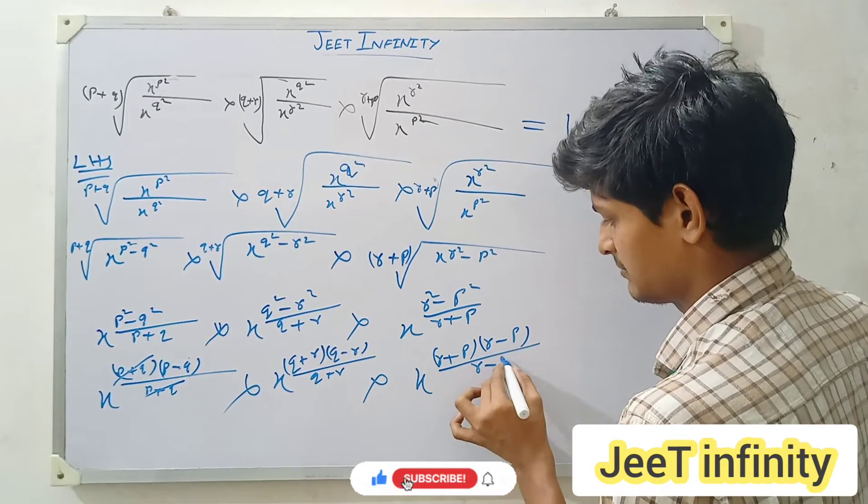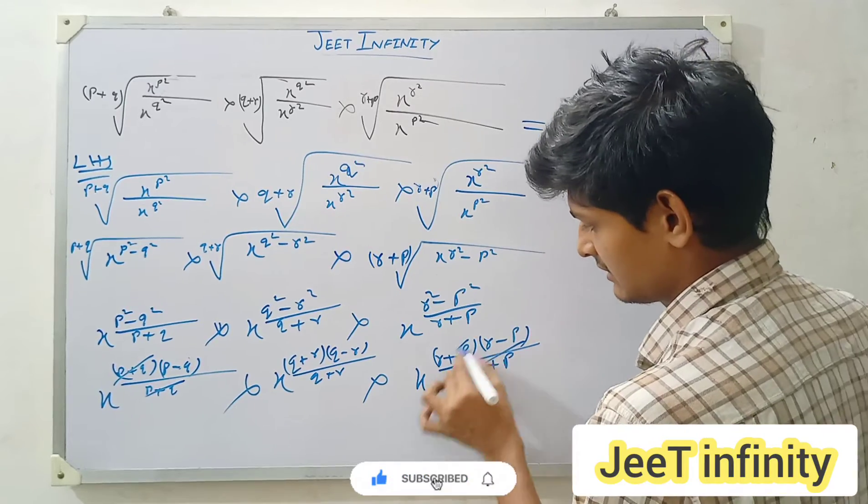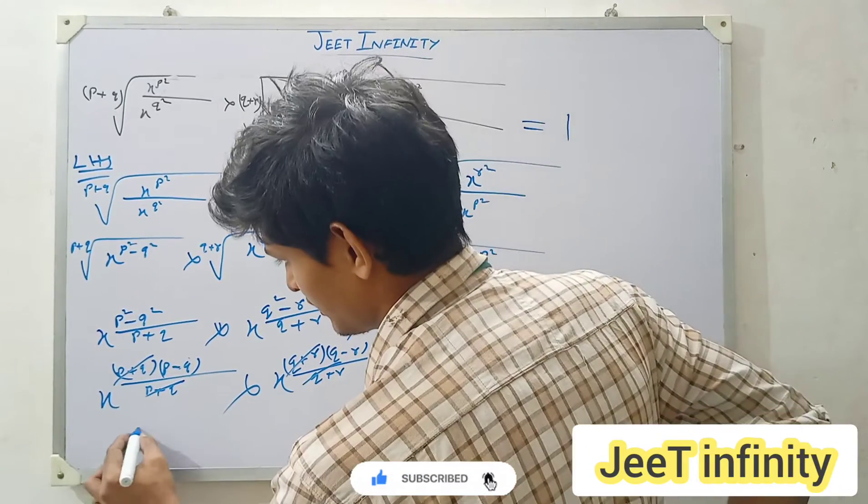Okay, then this cancels, this cancels. What quantity remains? x to the power (p minus q), x to the power (q minus r), and here what remains? x to the power (r minus p).